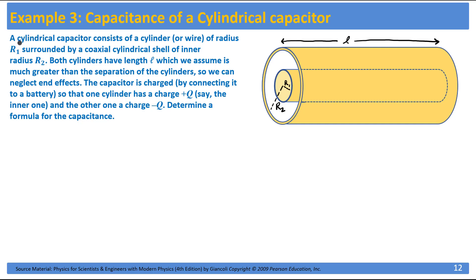In this example we have a cylindrical capacitor. Just like any capacitor, this consists of two conductors: one in the shape of a solid cylinder of radius r1, and the other in the shape of a very thin concentric shell of radius r2. These cylinders have a length of l. The question is: if you connect this to a battery so that it has charges q and minus q on these conductors, can you determine the capacitance?